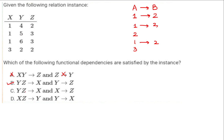Checking option C: for X→Z, the value 1 in X occurs three times and it maps to values 2, 3, so it is inconsistent — C is wrong. For option D: XZ combinations — (1,2)→4, (1,3)→5, and (1,3)→6 — the same combination (1,3) gives two different values, so XZ→Y is not functionally dependent either. D is also cancelled. Therefore the correct answer is option B.